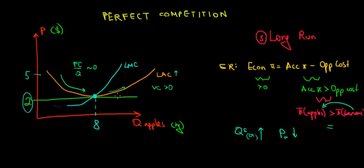The last condition to keep in mind for a perfect market is that the long-run marginal cost equals the price. It intersects at the same point, because we cannot do better on a higher portion — when the long-run marginal cost is above the price level we're making losses, and below it we have room for improvement. This is the same logic we apply to the short run.